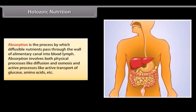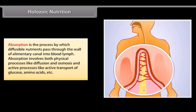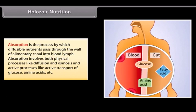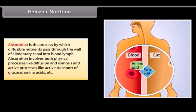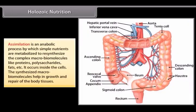Absorption is the process by which diffusible nutrients pass through the wall of the alimentary canal into blood and lymph. Absorption involves both physical processes like diffusion and osmosis, and active processes like active transport of glucose, amino acids, etc.